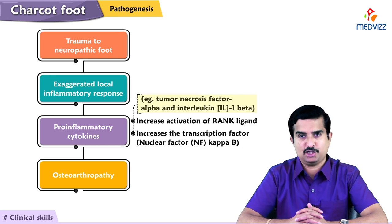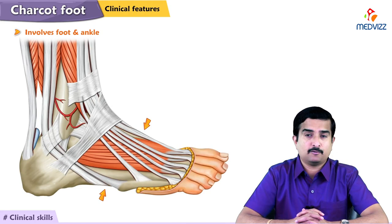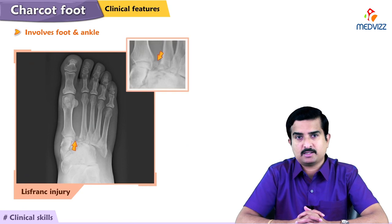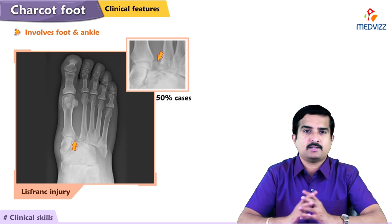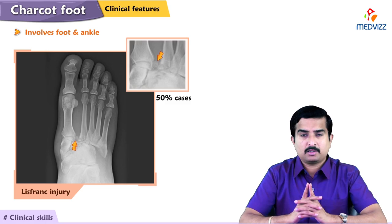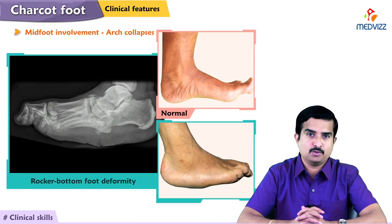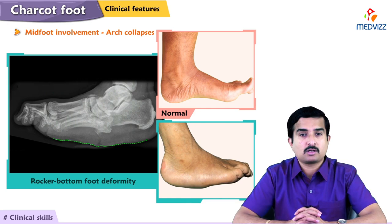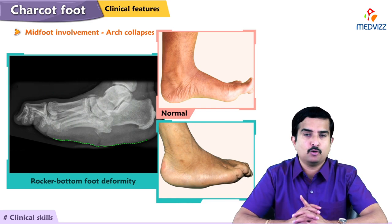Charcot neuropathic arthropathy most frequently involves the foot and ankle, and most frequently involves the tarsometatarsal joint — often called the Lisfranc joint — which is affected in about 50% of cases. When the midfoot is involved in Charcot foot, the arch collapses, as you can see on the screen, rounding the bottom of the foot. This is called rocker bottom foot deformity.